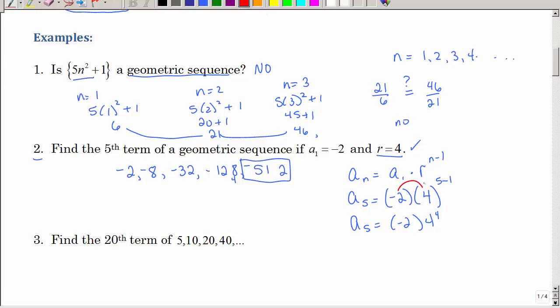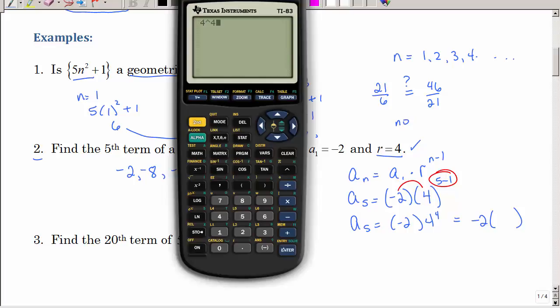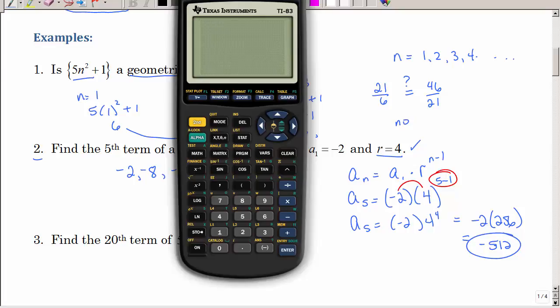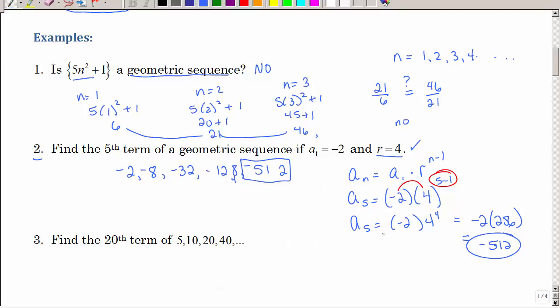So, negative 2 times 4 to the 4th power. And no, no, no, you cannot multiply those first. Order of exponents, I need to do that exponent first. So, I'd have negative 2 times 4 to the 4th power. I think I'll need a calculator. So, 4 raised to the 4th power is 256 multiplied times negative 2 is indeed negative 512. And yes, of course, I could have just punched this in all at one time to the calculator. So, our fifth term is negative 512.